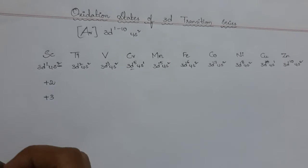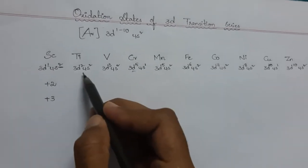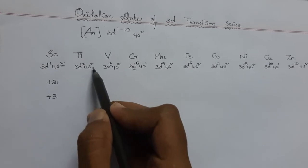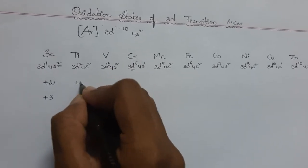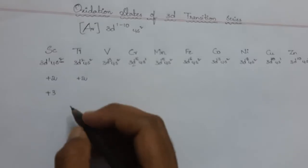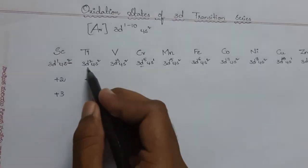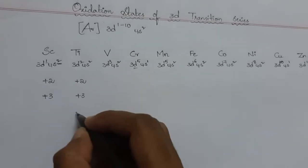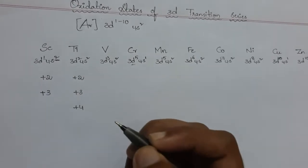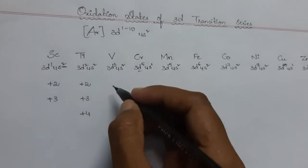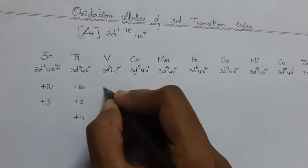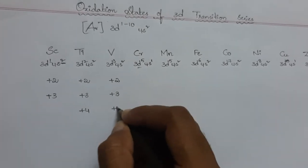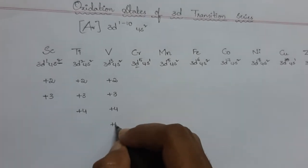Coming to titanium with 3d² 4s²: when it loses two electrons from the s orbital it acquires an oxidation state of +2, and from the d orbital it can acquire +3 and +4. Vanadium can give oxidation states of +2, +3, +4, and +5.